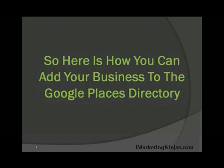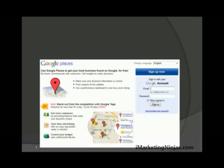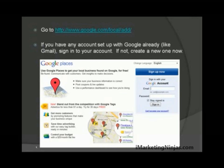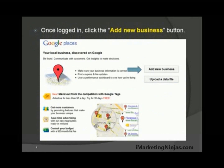Here is how you can add your business to the Google Places directory. First, go to the Google Places page at www.google.com/local/add — it brings you right to this page. Next, if you already have an account set up with Google, like Gmail for example, just sign in. If not, create a new one — it's free.